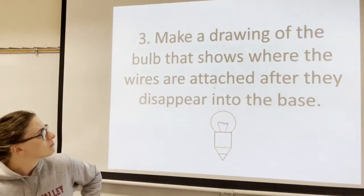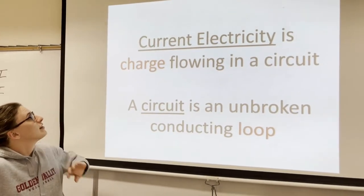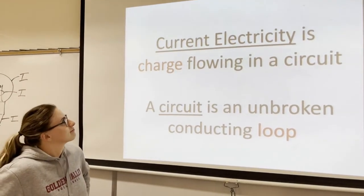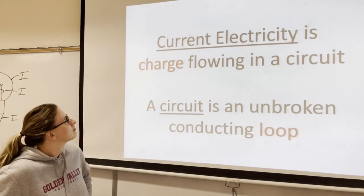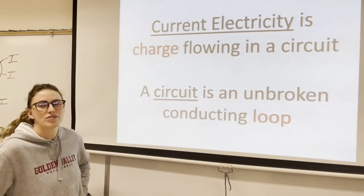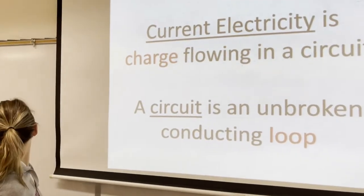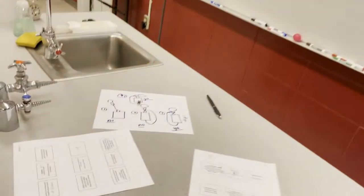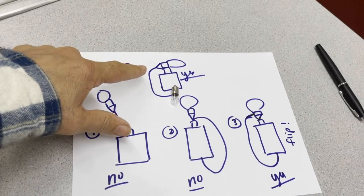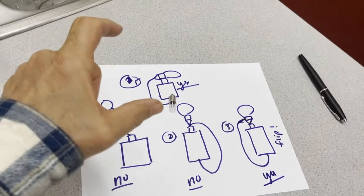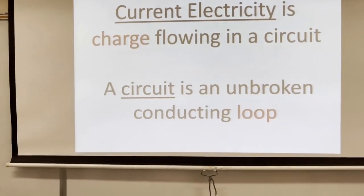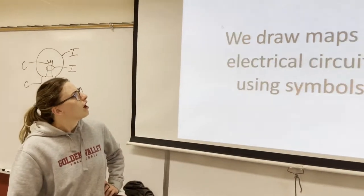Current electricity is charged flowing in a circuit. We were doing static electricity where the charge stayed in one spot; current electricity is when it's flowing. A circuit is an unbroken conducting path — circuit is like a circle, something that goes around. When we were doing the bulb experiments, we had some struggle making it light because the connection wasn't touching. In order to light up, it has to be an unbroken loop.